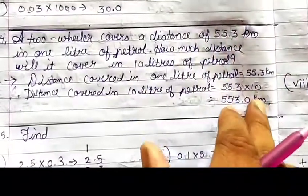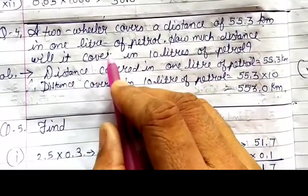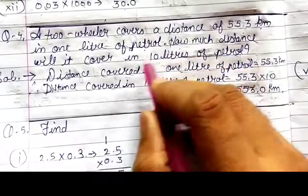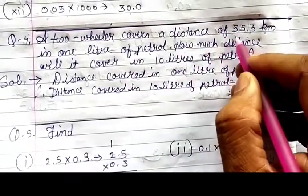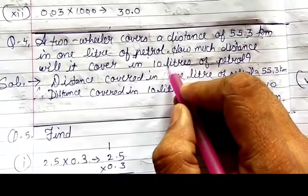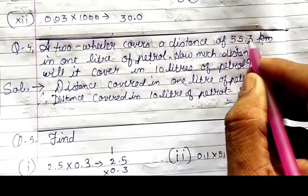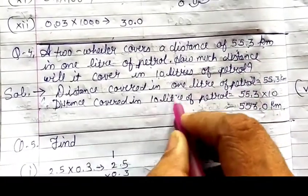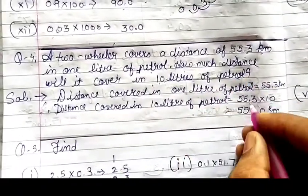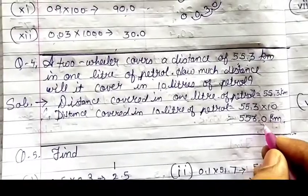Question number 4: A two-wheeler covers a distance of 55.3 km in one liter of petrol. How much distance will it cover in 10 liters? Simply multiply 55.3 by 10. The distance covered in 10 liters of petrol equals 55.3 into 10, which gives 553.0 km.